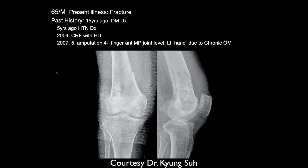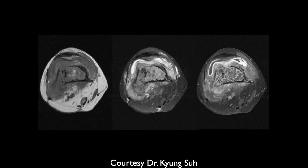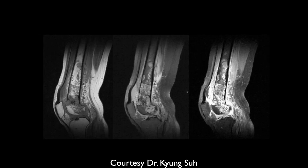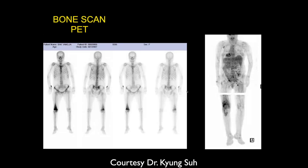65-year-old male with quite a bit of history: diabetes, hypertension, CRF, and amputation of the fourth finger MP left hand from chronic osteomyelitis. We're seeing the distal femur with a minimally displaced fracture through abnormal bone with mottled lucencies throughout the entire bone — it looks like a pathologic fracture. On MRI, there's marked heterogeneous signal of the bone, surrounding soft tissues, synovial enhancement, and marked soft tissue swelling. Assume this is osteomyelitis with pathologic fracture. A bone scan was obtained to make sure there weren't other foci because they were still concerned about malignant disease.